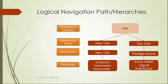Based on our understanding of the database structure, we can define our own custom navigation paths in the universe design. For example, it could go from country to town, and then to showroom, and then to franchises — multiple levels that we define ourselves. So these are the two types: the default (natural) navigation and the custom (user-defined) navigation.